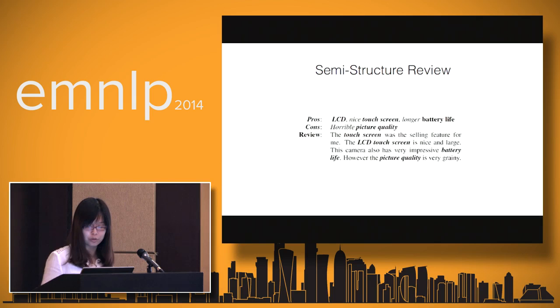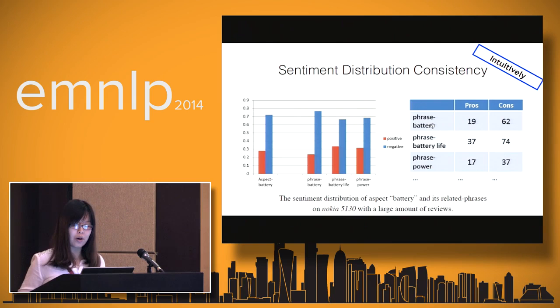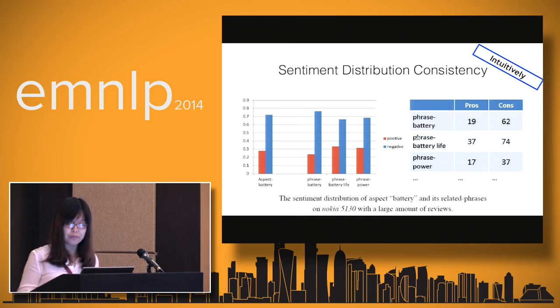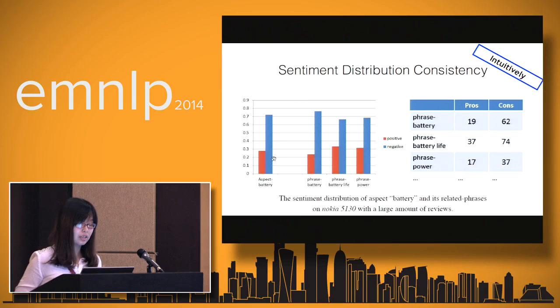We got this semi-structured review and will collect sentiment information from it. For example, here is a Nokia cell phone product, and we have a large amount of reviews. We got the phrase 'battery' and go through all reviews, counting how many times this phrase appears in pros and how many times in cons. So we can get a sentiment distribution for this phrase on this Nokia cell phone, and do the same for other phrases. We can also get a sentiment distribution of the corresponding aspect by a weighted average of the phrases it contains. We can see that the sentiment distribution of a certain phrase is really similar to that of its corresponding aspect.